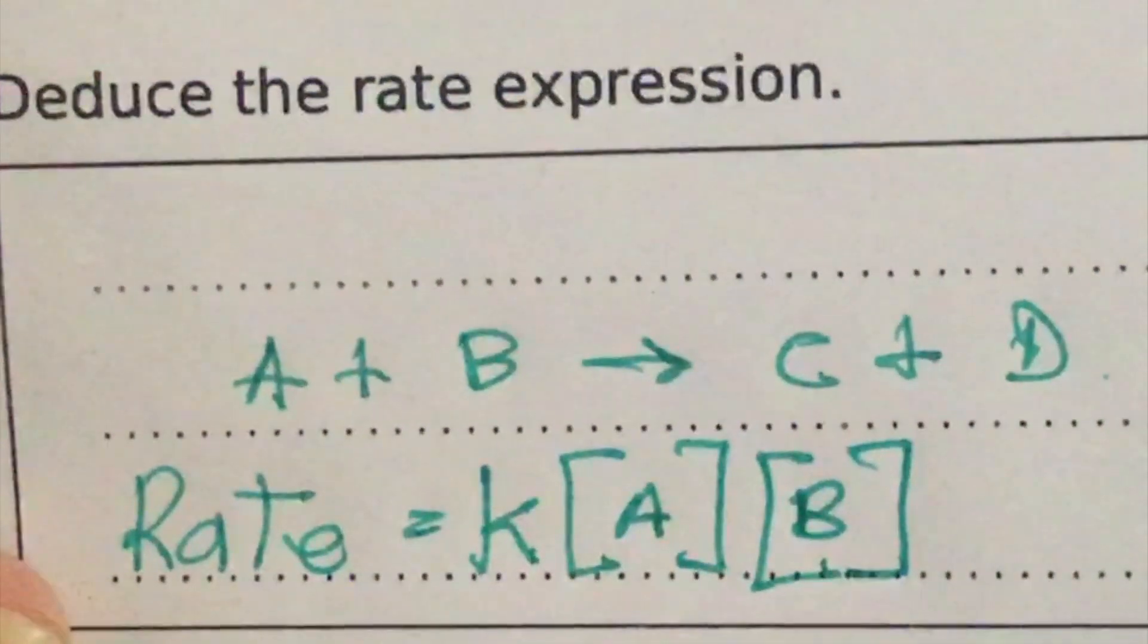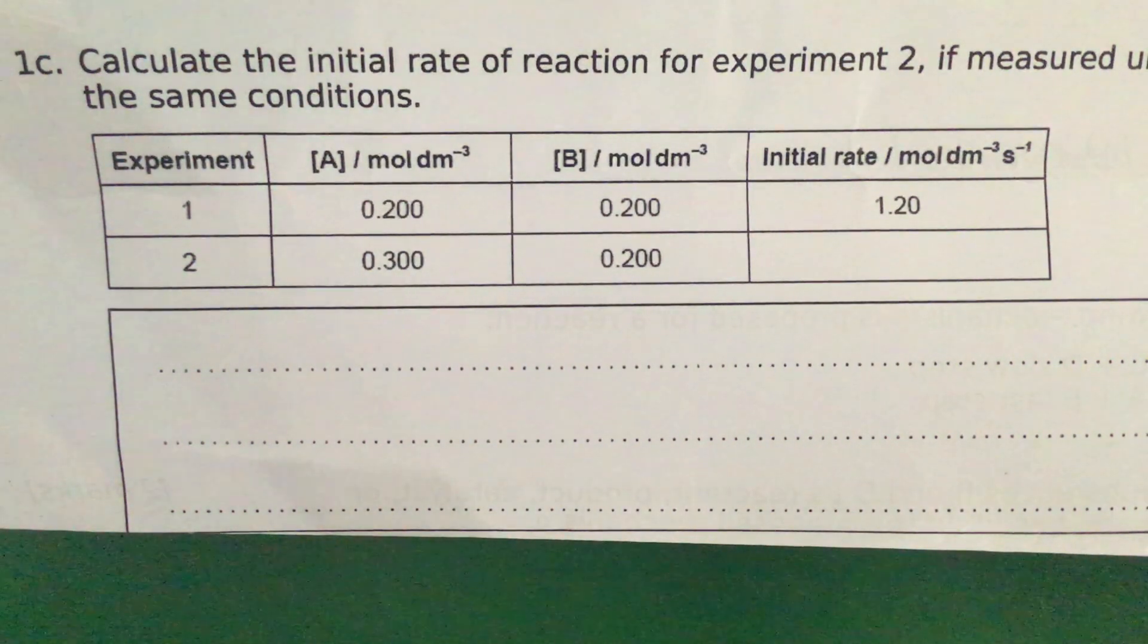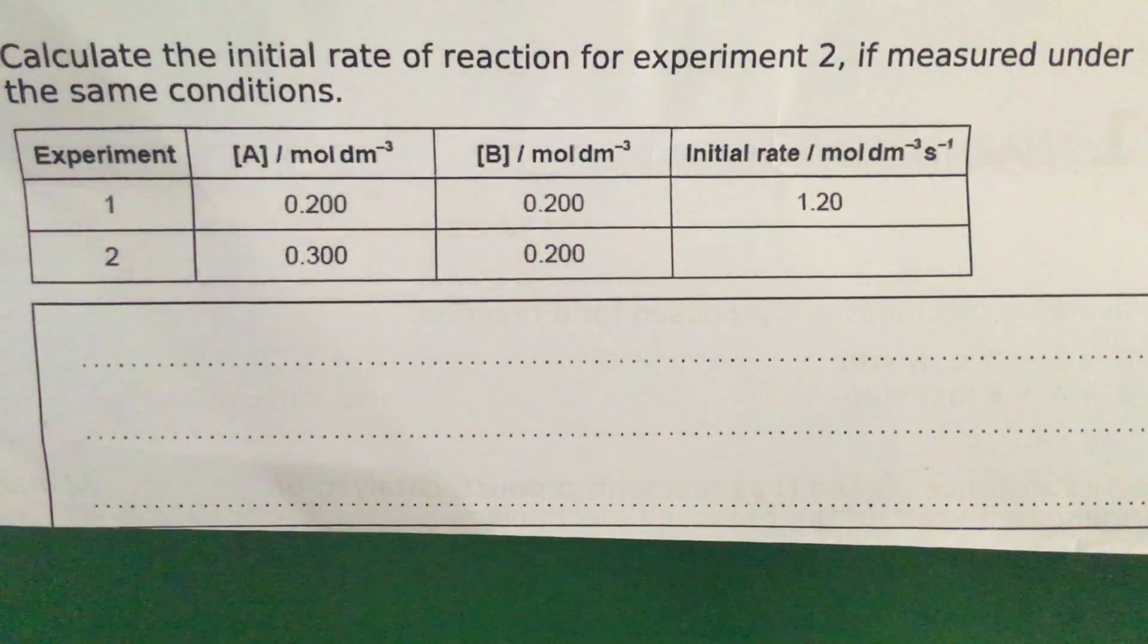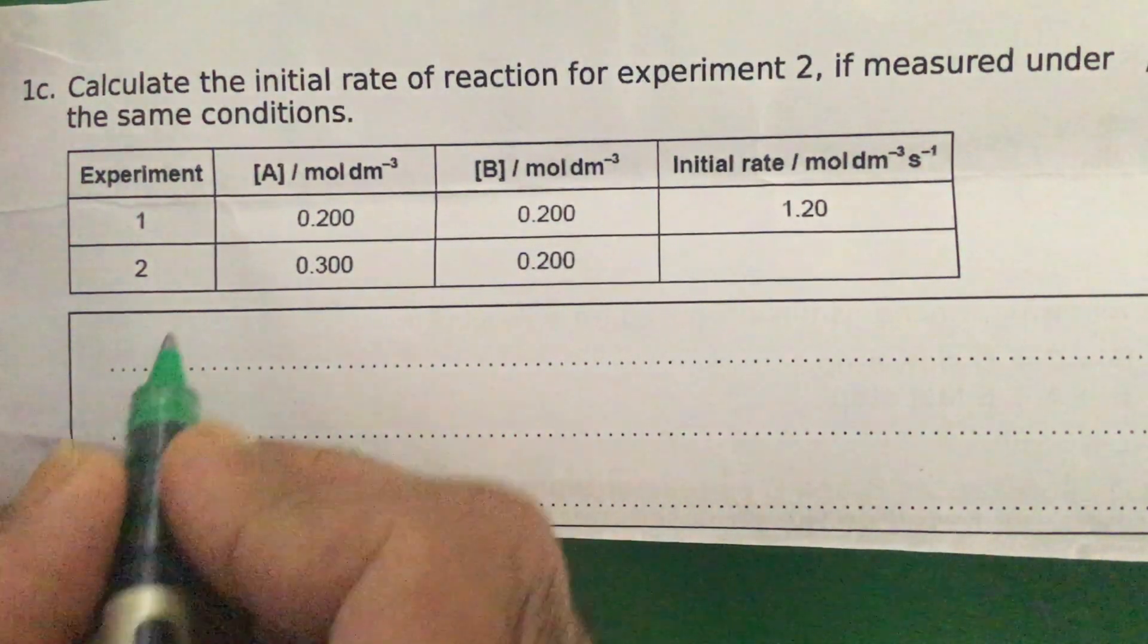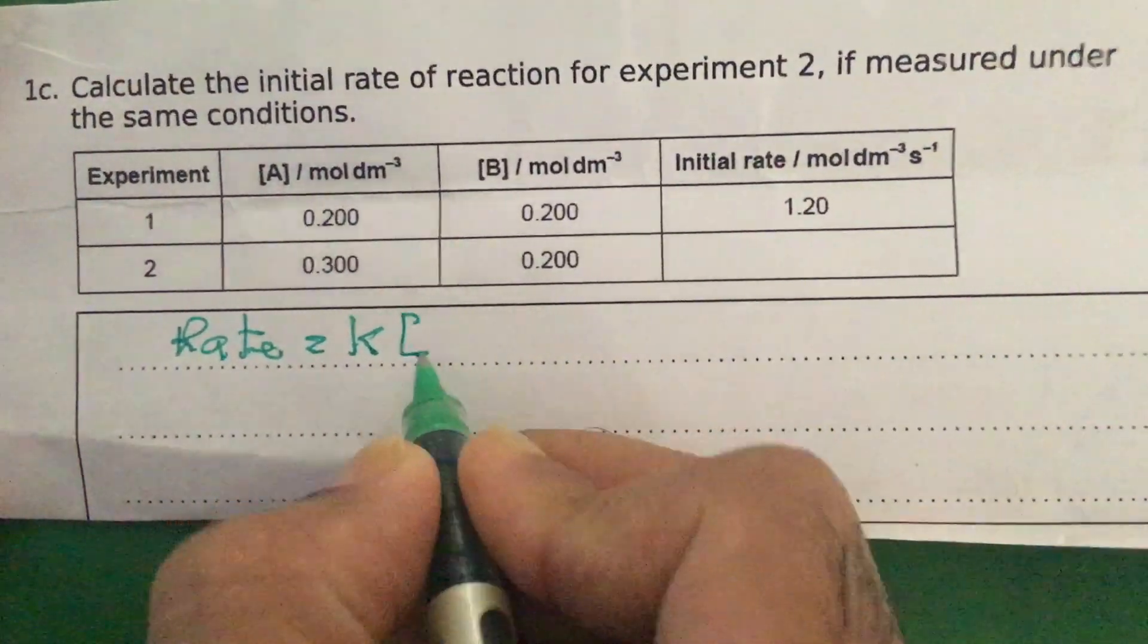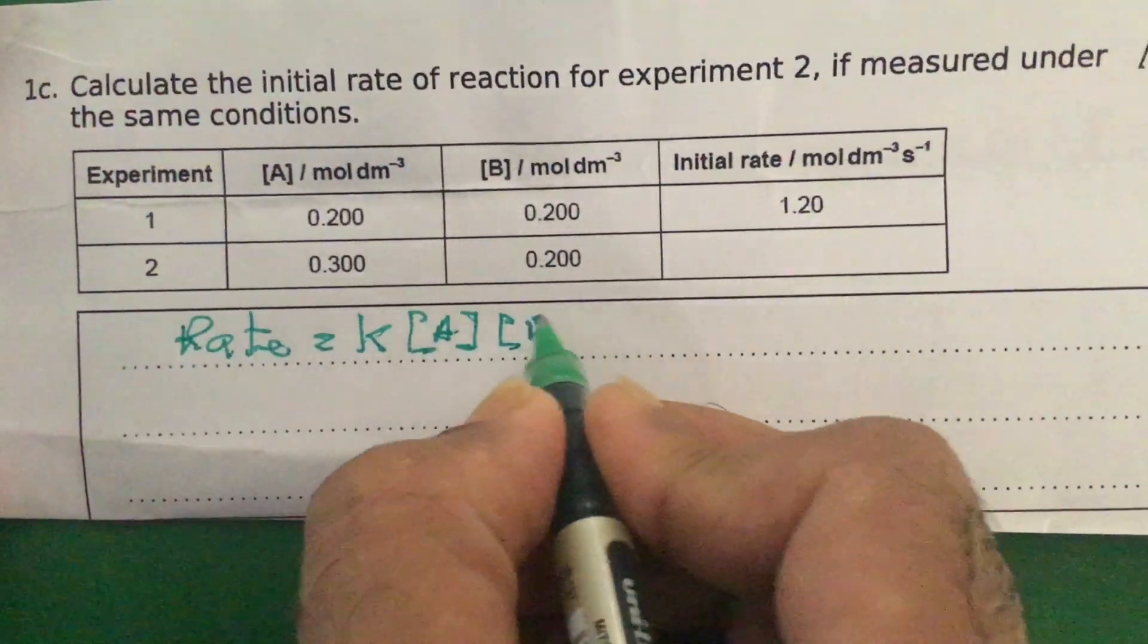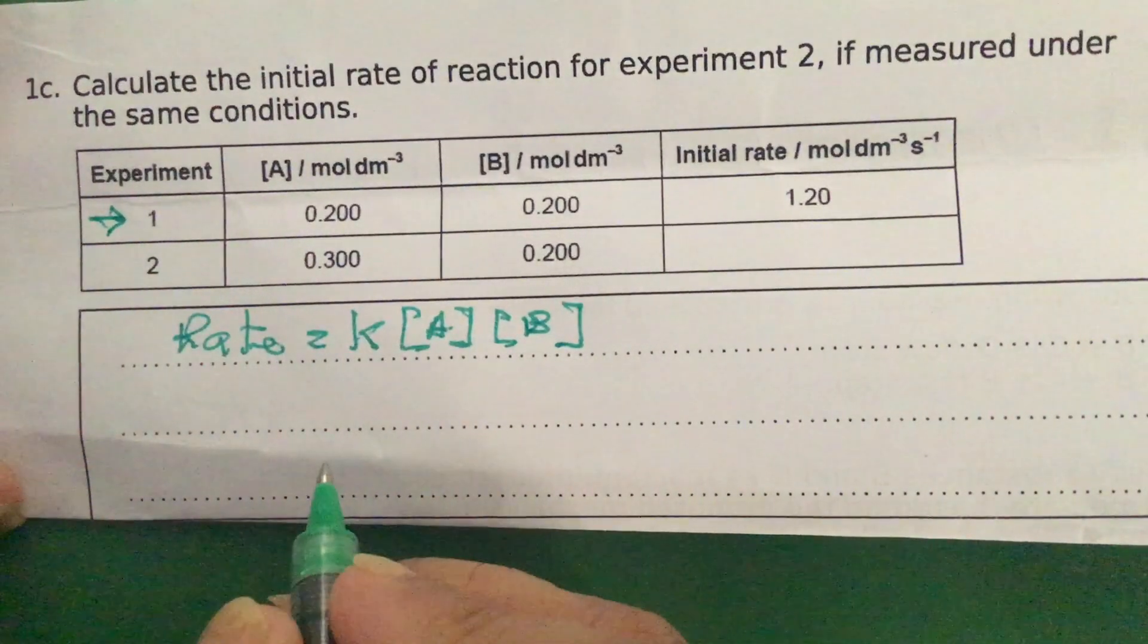And the third and final part of the question says: calculate the initial rate of reaction for experiment two if measured under the same conditions as experiment one. Well we've already determined the rate expression or the rate law as rate equals k multiplied by the concentration of A multiplied by the concentration of B. So using experiment one we can solve for k